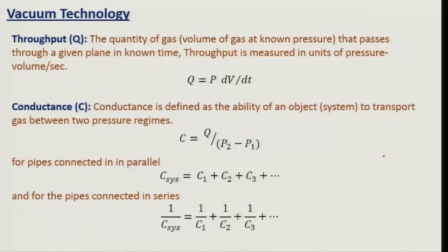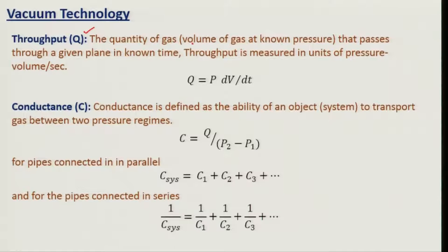Before we go and learn about different types of vacuum pumps and how to create vacuum, let me introduce some definitions. The first one is throughput, Q. Throughput is defined as a quantity of gas — the volume of gas at known pressure — that passes through a given plane in a known time. So if I am passing some gas through a plane in known time, how much gas has passed through is the quantity called throughput.